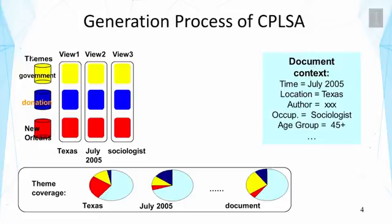This example is in the context of Hurricane Katrina that hit New Orleans. We assume there are different views associated with each of the topics, shown as view 1, view 2, or view 3. Each view is a different version of word distributions, and these views are tied to some context variables — for example, tied to the location Texas, or the time July 2005, or the occupation of the author being a sociologist.